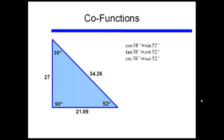So cosine of 38 degrees equals the sine of 52 degrees. The tangent of 38 degrees equals the cotangent of 52 degrees. The cosecant of 38 degrees equals the secant of 52 degrees. What's the relationship between 38 degrees and 52 degrees? They are complements of each other — 52 degrees equals 90 degrees minus 38 degrees. So cosine of an angle equals the sine of 90 degrees minus that angle, and tangent and cotangent, and cosecant and secant, follow the same pattern.